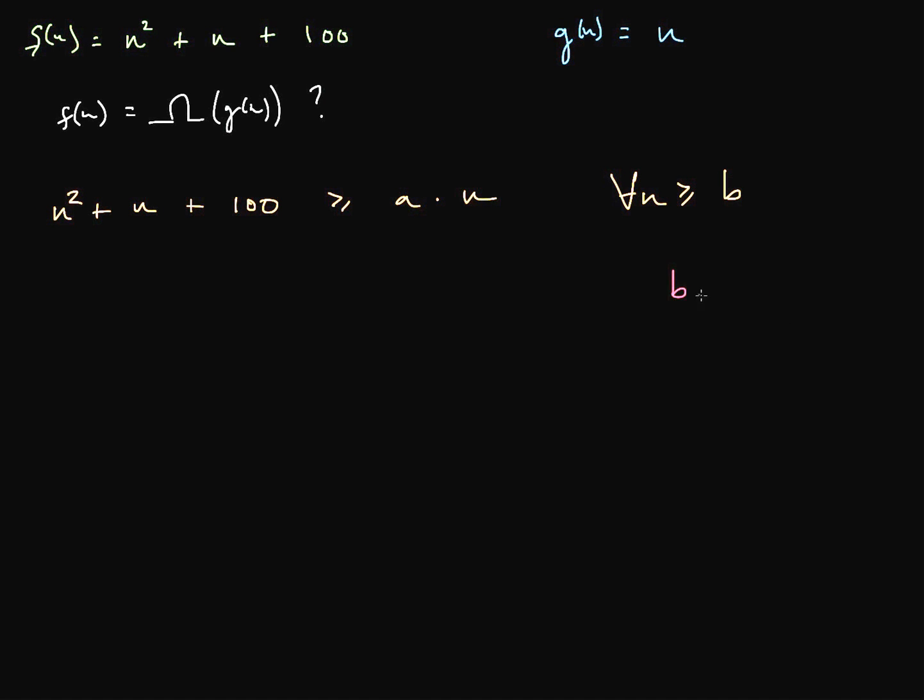So let's choose b equal to 1, so our lowest value of n should be 1 here. If we plug that in, 1 squared is 1, we get 102 must be greater than or equal to a times 1. So we can say that as long as a is less than or equal to 102 while b is equal to 1,